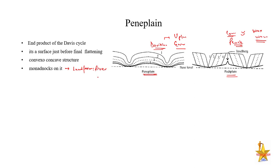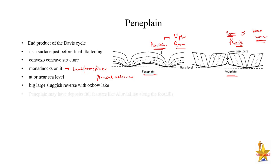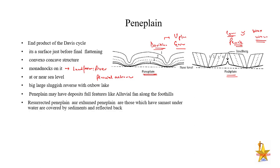The Peneplain is the last phase of the river, formed by fluvial action. It features large, sluggish rivers with Oxbow Lakes. Peneplain may also have depositional features like alluvial fans along the foothills, similar to deltas. So you can expect such fluvial depositional features here as well.